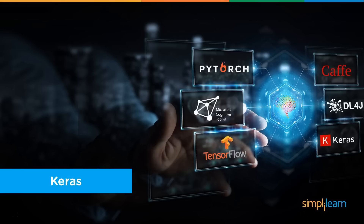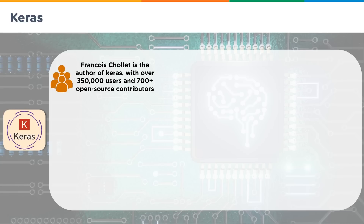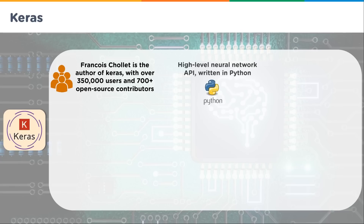Let's talk about Keras — we mentioned overlapping earlier, and Keras is probably the most overlapping package out there. Keras was originally developed by François Chollet and has over 350,000 users and 700-plus open source contributors. TensorFlow might be the biggest or most well-known package, but Keras, because it overlaps so many other areas and is such a high-end development, is probably the fastest-growing package out there. It has a high-level neural network API written in Python.